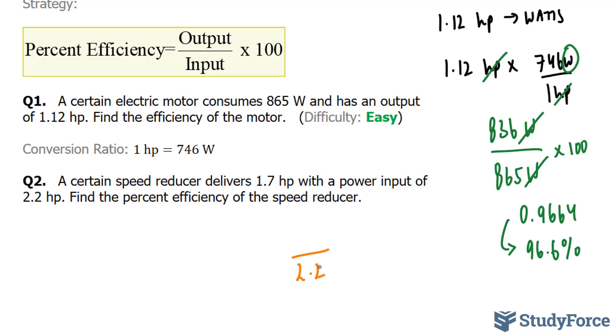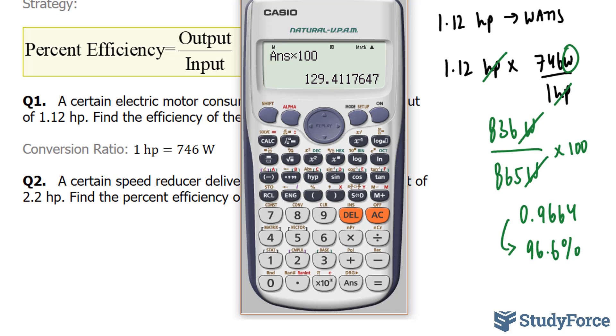And that has two significant figures. And our output is 1.7. I'll divide these two numbers, then multiply by 100. And that should give us our percentage. 1.7 divided by 2.2 times 100.